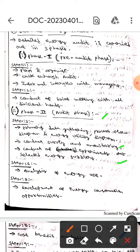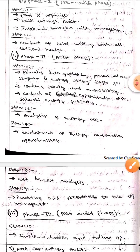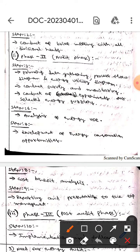The next step is analysis of energy use. Step seven is development of energy conservation opportunities. Step eight is cost benefit analysis. Step nine is reporting and presentation to the top management.